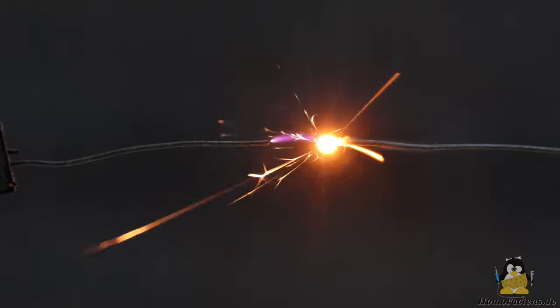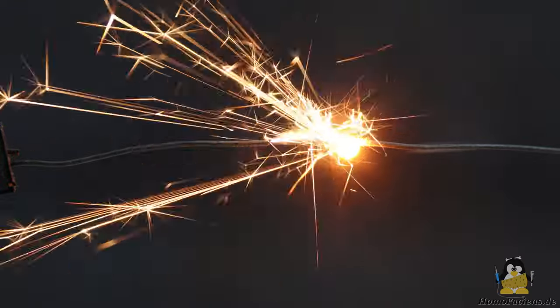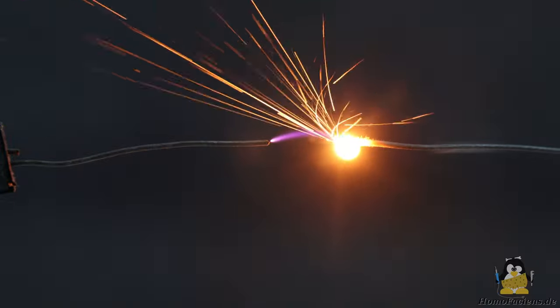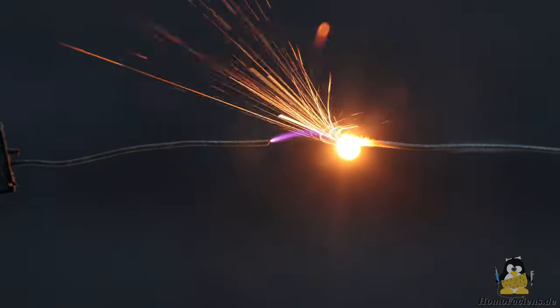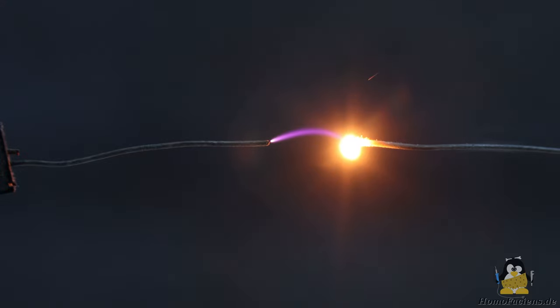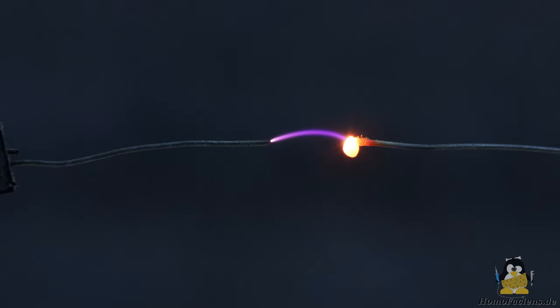As the next experiment, let's attach two thin wires to the terminals of the high voltage generator and turn on the power. Now it can actually be observed that the wire tip to the right, which is connected to ground, begins to glow and melts. At a distance of about 10mm, the gap remains constant. A ball of molten and resolidified metal has formed at the tip of the right wire.